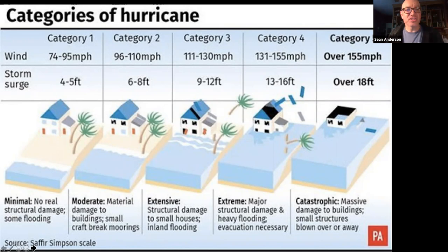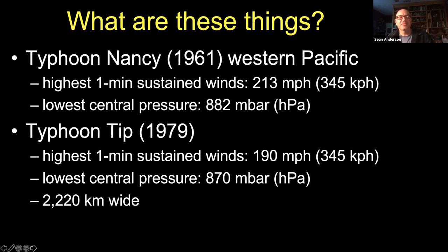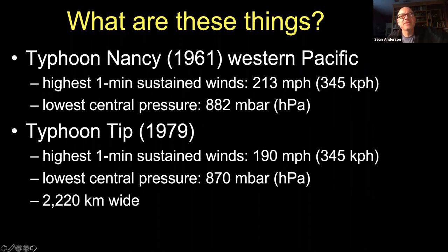A couple of examples of the biggest hurricanes ever measured. Typhoon Nancy in 1961 in the Pacific had the strongest sustained winds ever recorded at 213 miles per hour — though this is slightly controversial due to possible measurement error. There is no way to survive 213 mph winds outdoors. A piece of paper flying at that speed could cut you open; trees cannot avoid snapping.